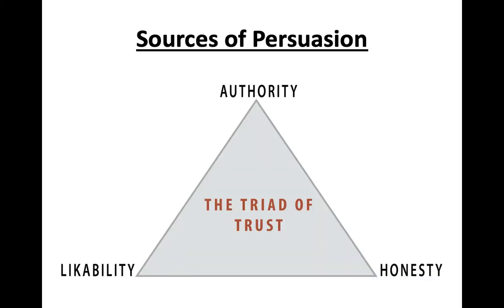Staying on the peripheral route: we'll often be less motivated to pay attention to the exact arguments and more influenced by who's giving the message — the source of persuasion. The persuasion literature tells us that effective persuasion requires trusting the source of the message. Research has identified three characteristics in people that lead to trust: their perceived authority, their honesty, and their likability. When a source appears to have any or all of these characteristics, people will be more willing to agree with their requests without carefully considering all the arguments or facts.